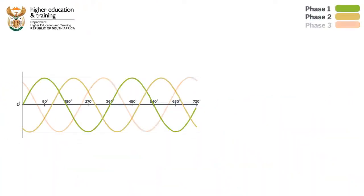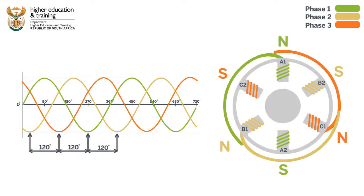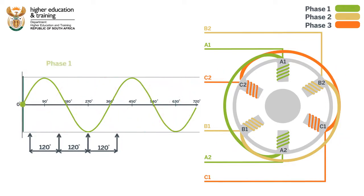With three phase power, each phase is separated by 120 electrical degrees. Each pair of stator windings is connected to one phase. As current flows through each pair of windings, electromagnets are formed and a magnetic field is created.